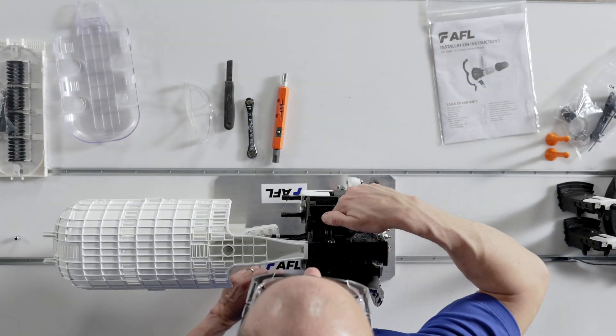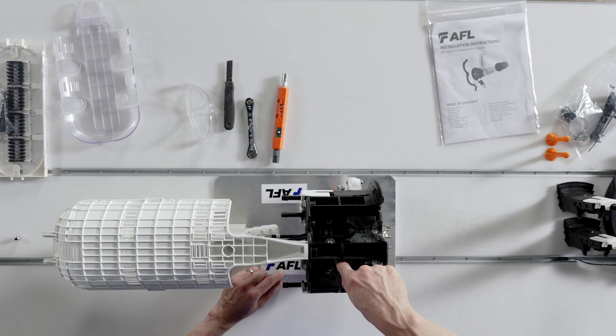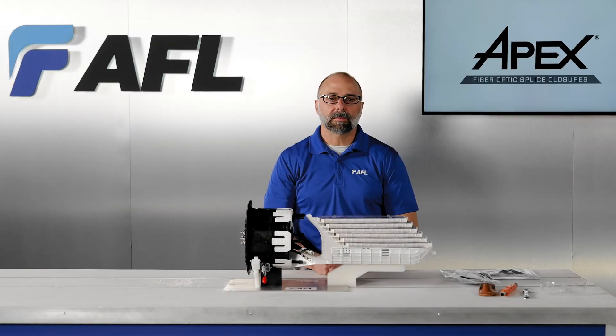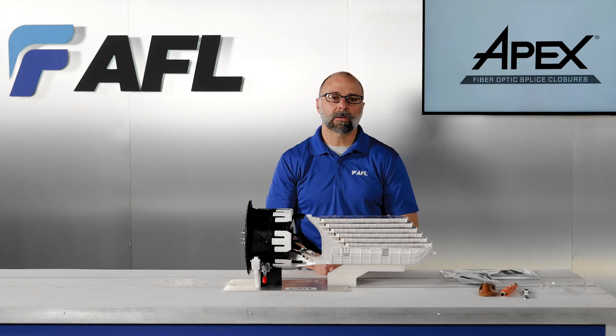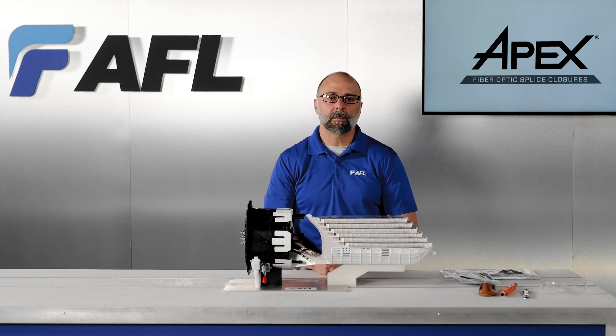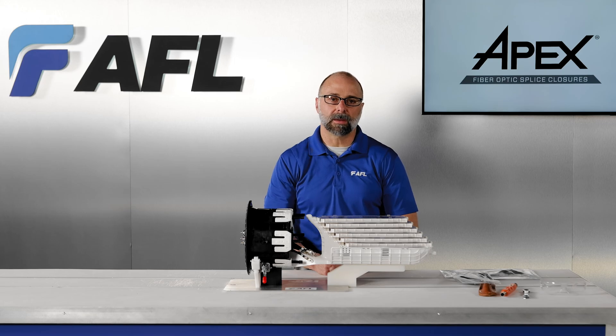Molded in the base is the rectangular alignment tab for the CAU bracket. At this point in time we can begin to prep the cable needed for the installation. I'm going to use an 864 spiderweb ribbon cable for the backbone and a lateral to a 48 fiber loose tube cable.